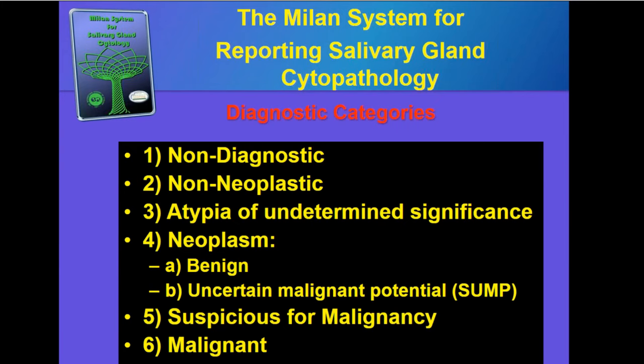Here are the six important diagnostic categories of the Milan system. Number one: non-diagnostic. Number two: non-neoplastic. Number three: atypia of undetermined significance. Number four: neoplasm — divided into two groups, benign and uncertain malignant potential. Number five: suspicious for malignancy. And number six: malignant. I'm going to take you through each of these diagnostic categories, tell you what the criteria are, and give you some examples.